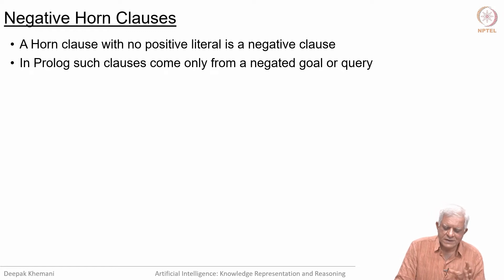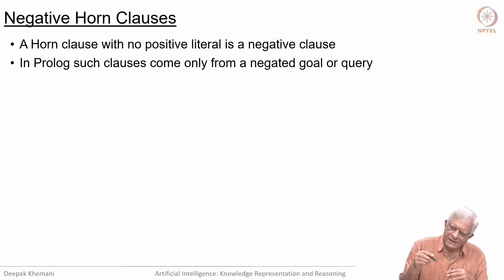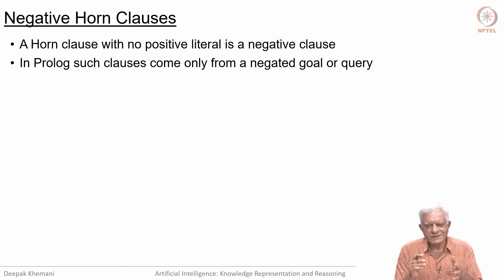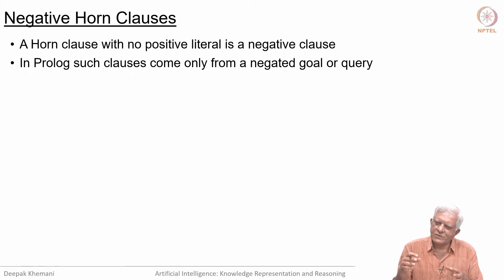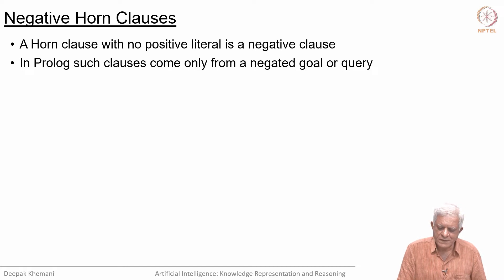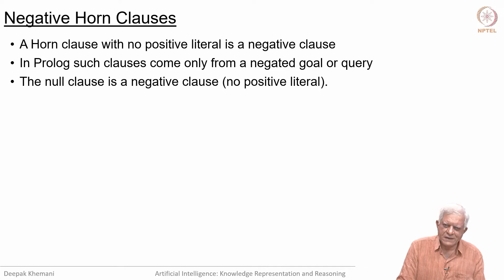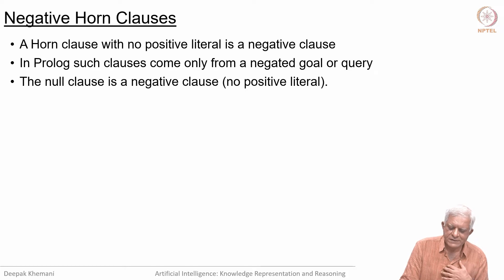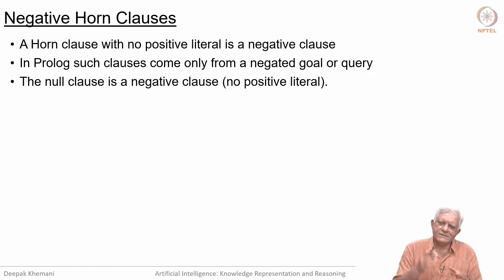In Prolog, such clauses come only from the negative goal or the query. The program itself is positive definite horn clauses, but the goal is negative. When we talk of resolution and backward chaining, we have to distinguish between goals and facts. We negate the goal and treat it as any other fact, and if you can derive the null clause, then you are done. The empty clause is by definition a negative clause — it has no positive literal and evaluates to false, and that is why the whole knowledge base becomes inconsistent once you can derive the null clause.